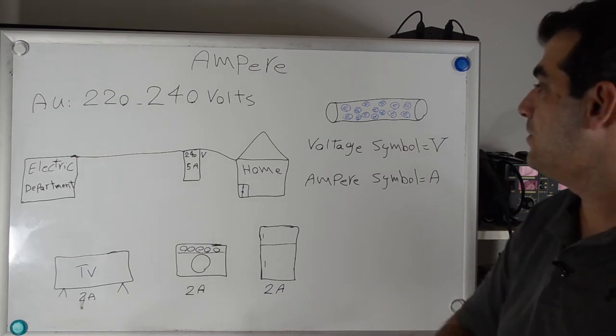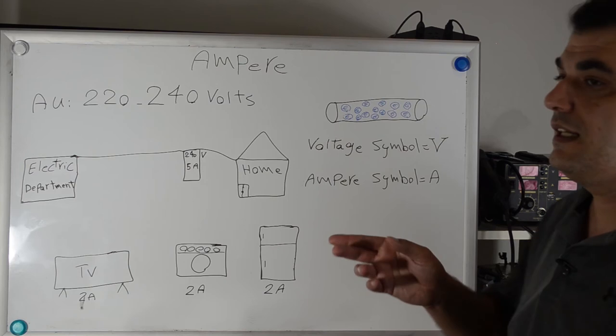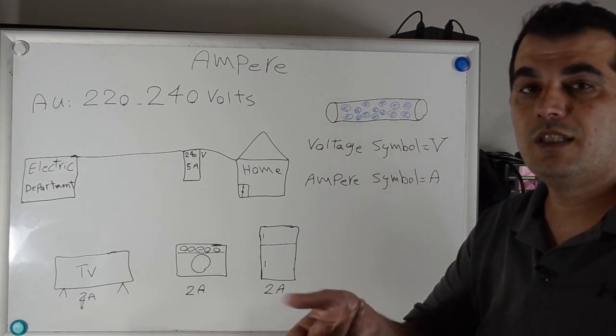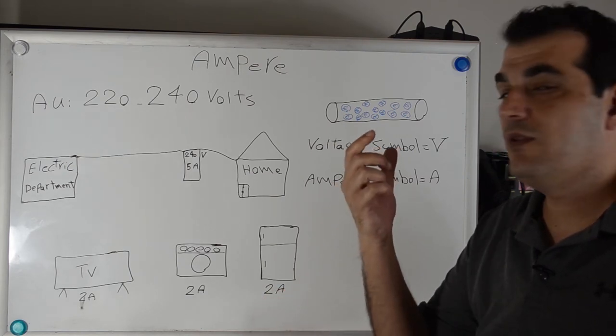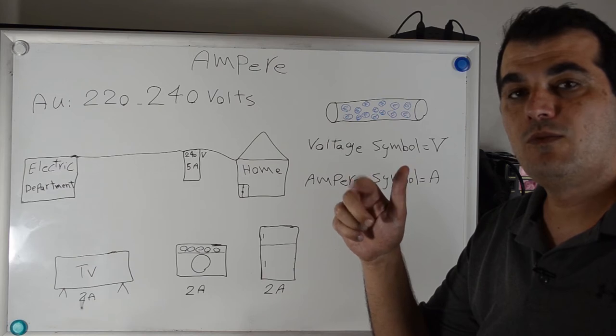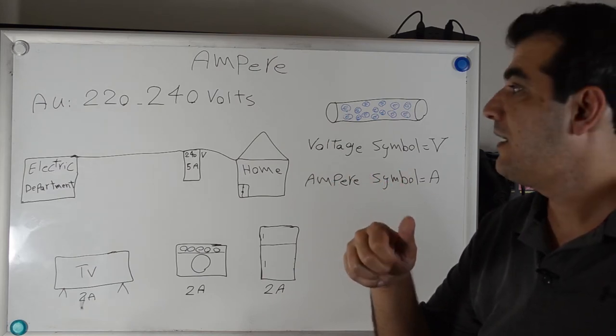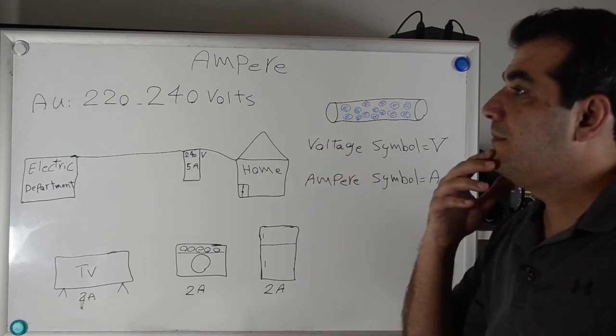When you see capital V and capital A in the electrical circuit or schematic diagram, right now you know capital V means voltage and A is ampere. Now first I talk about how it measures your power consumption.